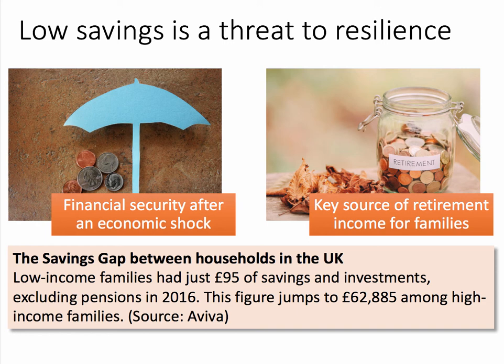Savings are also a key source of retirement income for families from pension funds. According to the latest data from Aviva, low-income families in Britain had just £95 in savings and investments, excluding pensions, in 2016 — a staggeringly low figure. High-income families have more than £60,000 in savings and investments outside of pensions. So millions of families are literally living hand-to-mouth, week-to-week, month-to-month, with very low savings indeed.